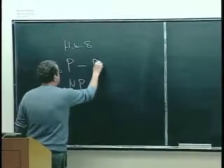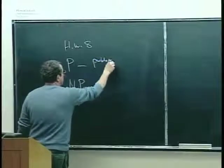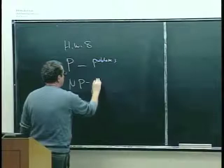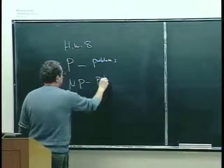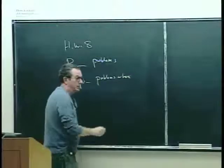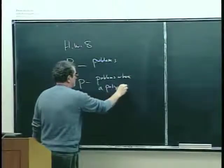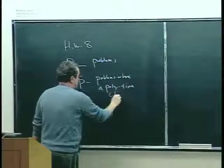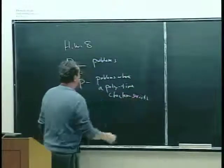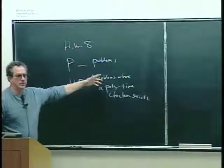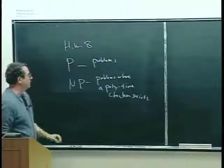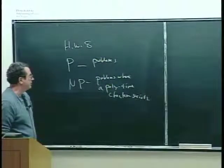Informally, NP was: there exist decision problems where a polytime checker exists. But actually neither of these definitions that we did last time, nor the examples we did last time, are formally correct, and so that's what I want to do today — to really make this formally correct.